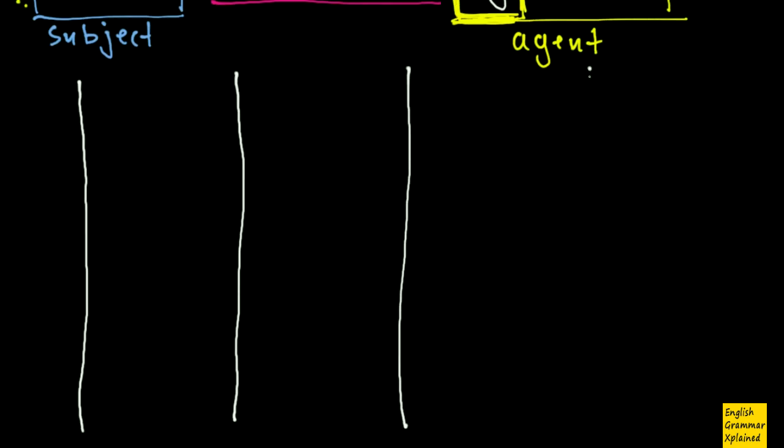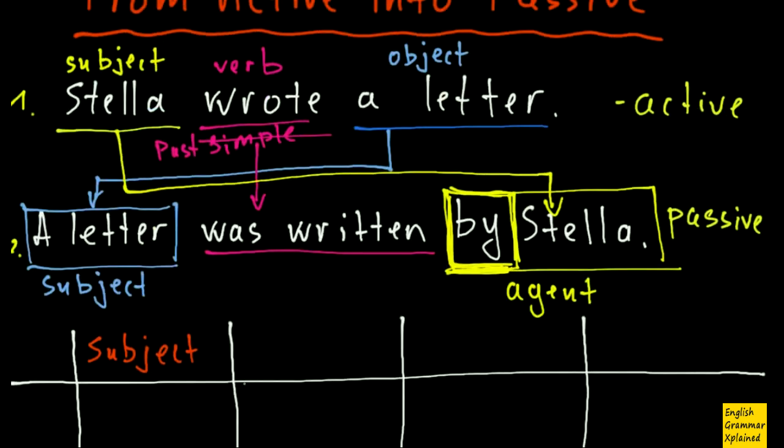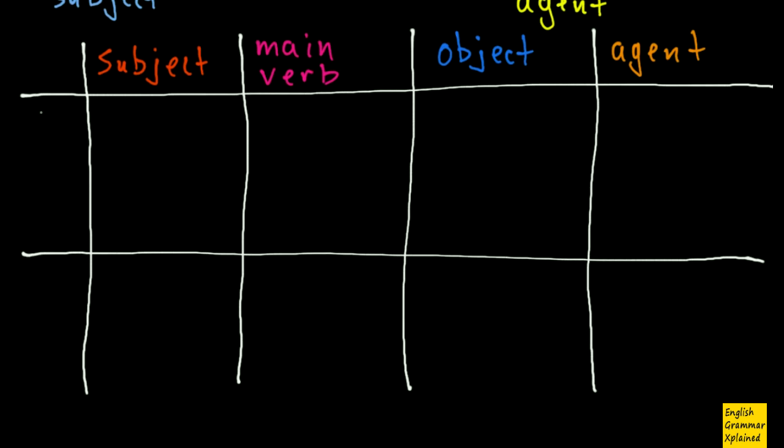And because my sentences basically consist of three main parts, I can draw some table. And here I have subject, because I have subject in active and in passive, then main verb, and then object, and of course I have agent in passive. So here I have active, and here I have passive.